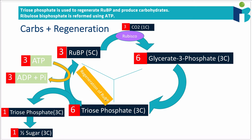The third part of the cycle is the regeneration of RuBP. Of the six triose phosphate molecules, five sixths — that is, five of them — return to become ribulose bisphosphate again, requiring ATP from the light-dependent reactions. This is why we call this stage regeneration: five triose phosphates are used to regenerate ribulose bisphosphate.